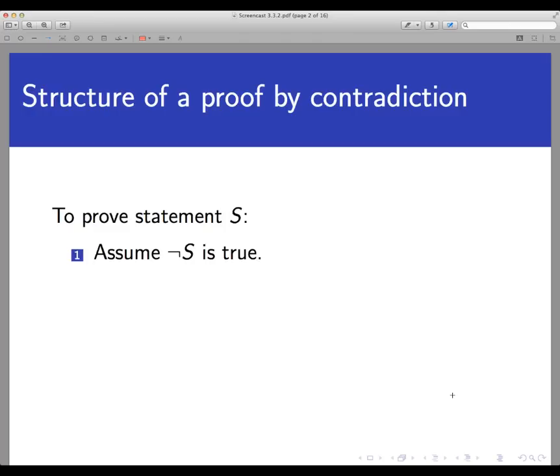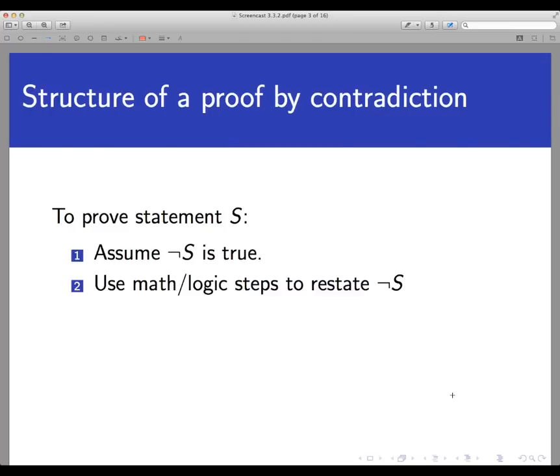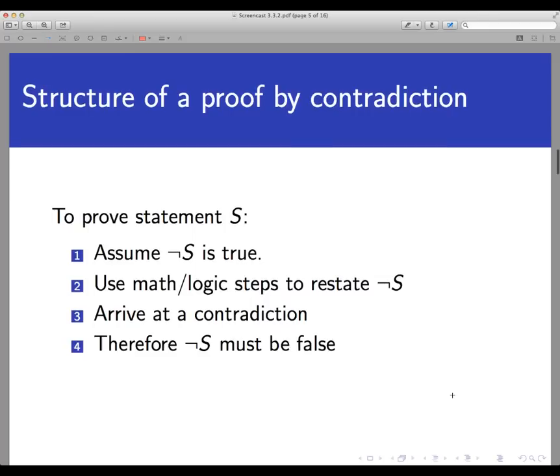Then we use valid mathematical and logical steps, as well as facts and definitions, to work forward from this assumption, restating not S, and exploring the logical consequences of assuming that not S is true. Eventually we'll arrive at a contradiction to a known fact, or at a situation where two opposed facts must be true at the same time. This forces us to reject the assumption that S is not true, and so not S must be false. That means S, the original statement, must be true.